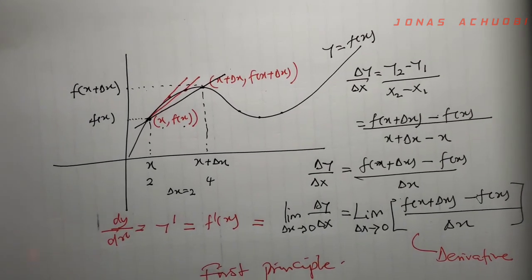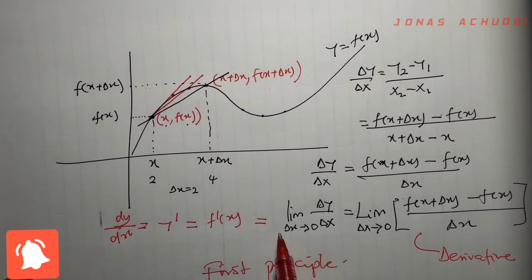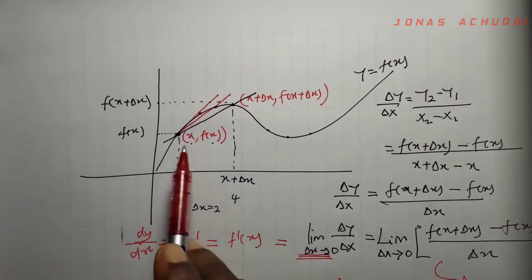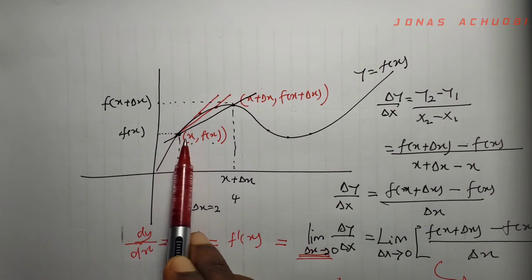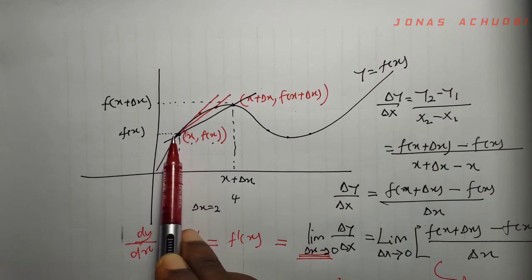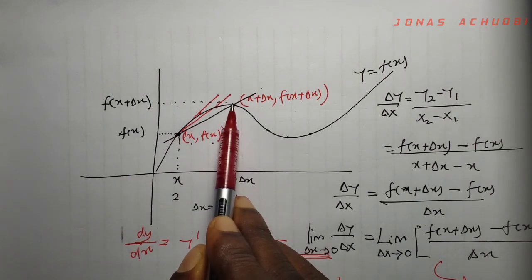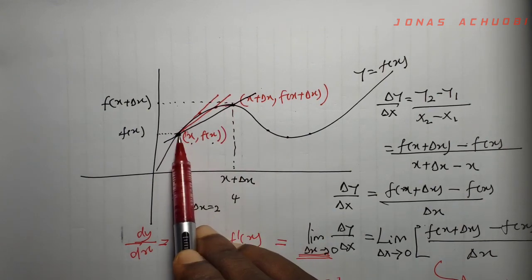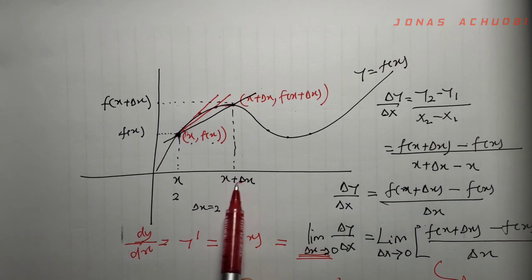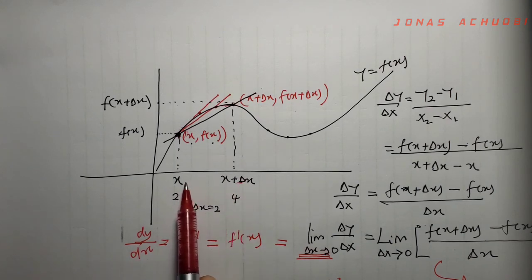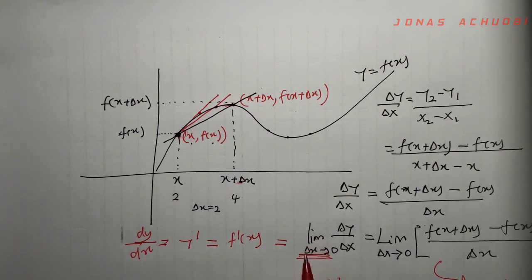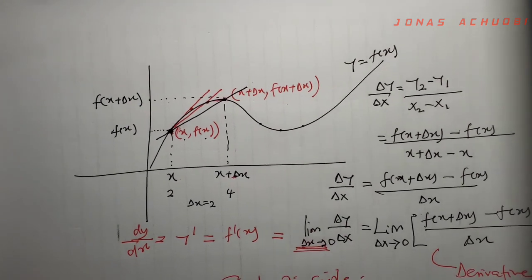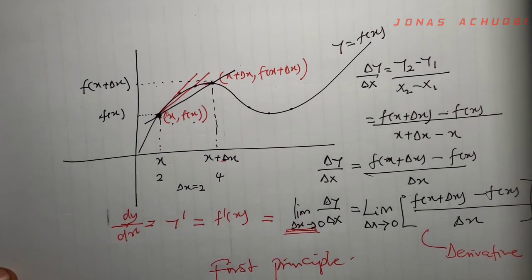Just to conclude: the limit as Δx tends to zero comes in because to get a good approximation of the slope at a point, the second point must be as close to the first point as possible, so much so that the change in x becomes as small as possible. So we say the limit of the change in x tends to zero of the slope, and this gives us the core of differentiation by first principle.